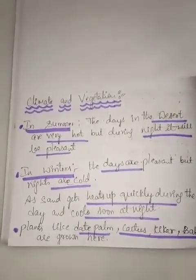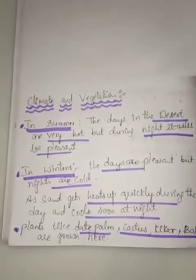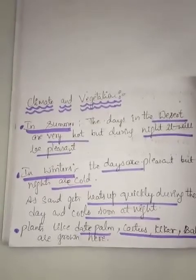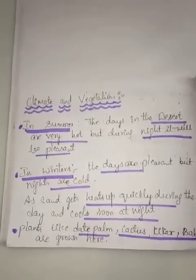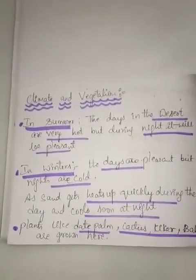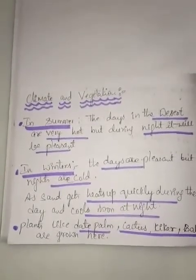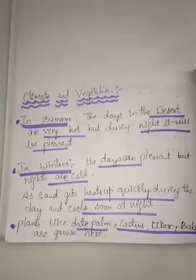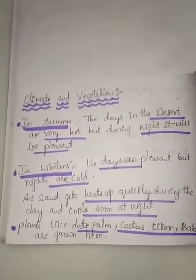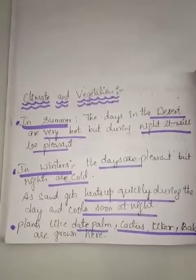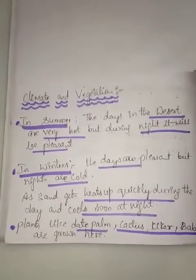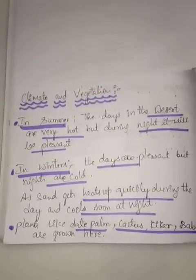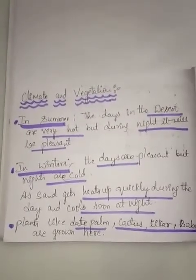Hot and dry winds are very common in the desert. The desert gets little or no rainfall, and as a result only a few plants can be grown or seen in this area — like date palm, cactus, and khejri and babul — which require very little water.